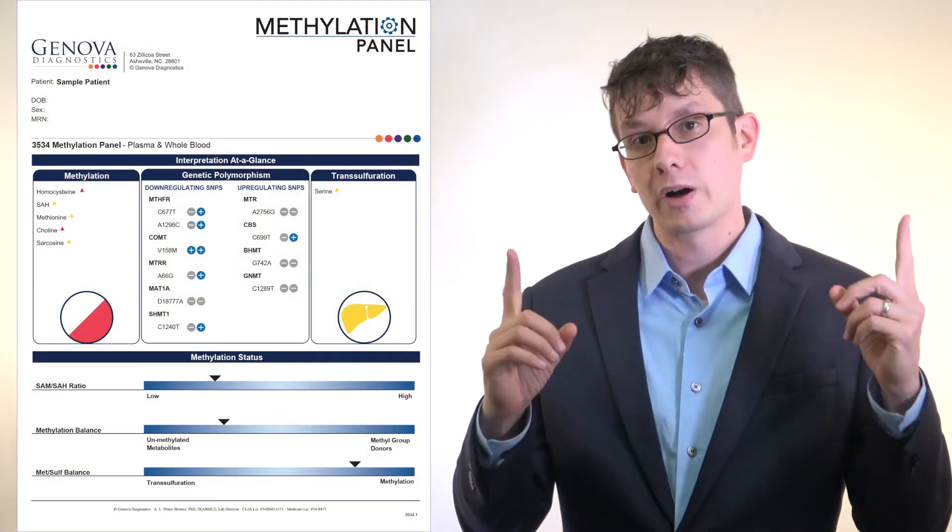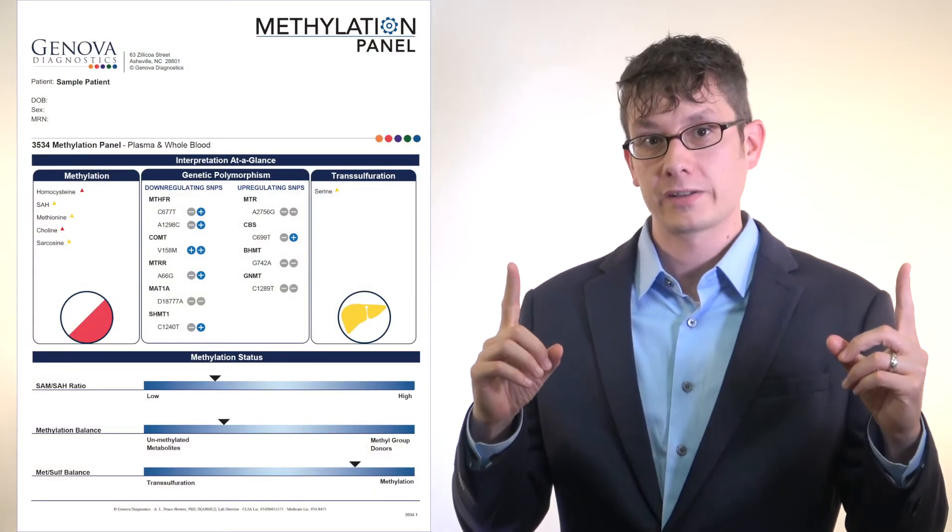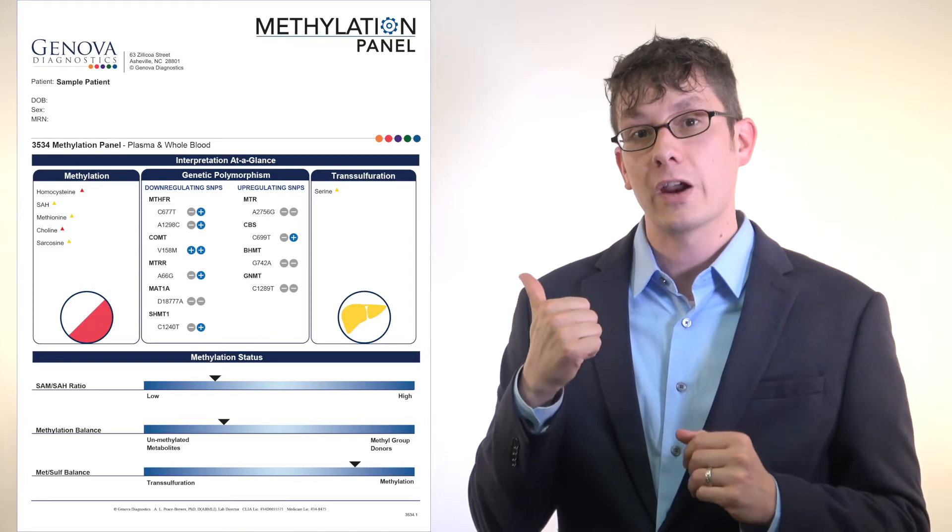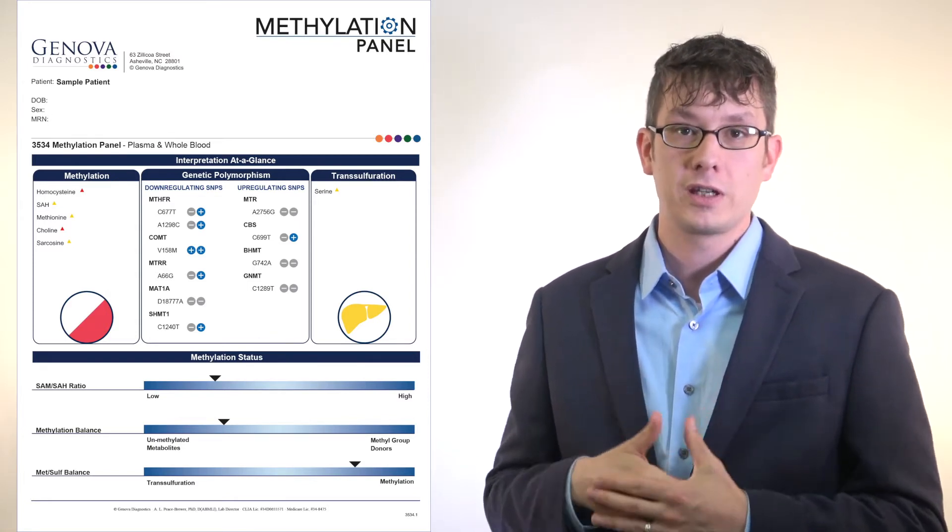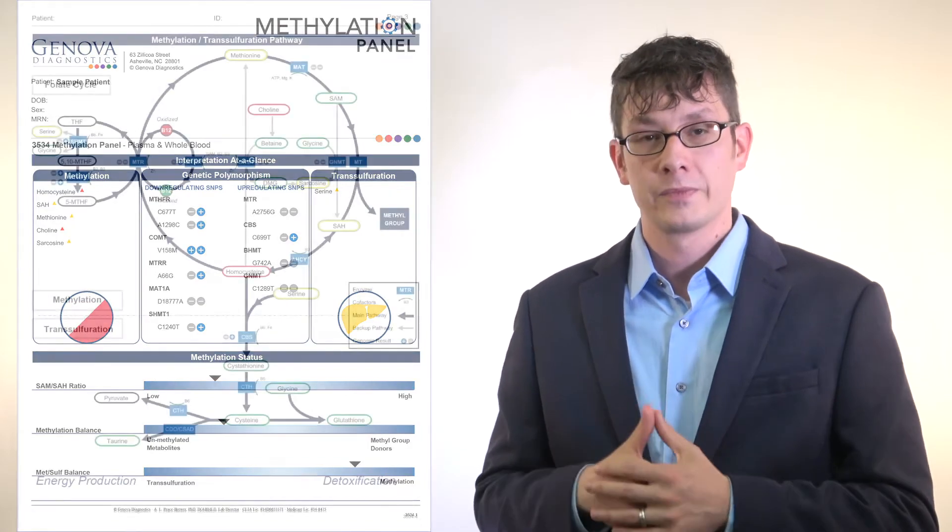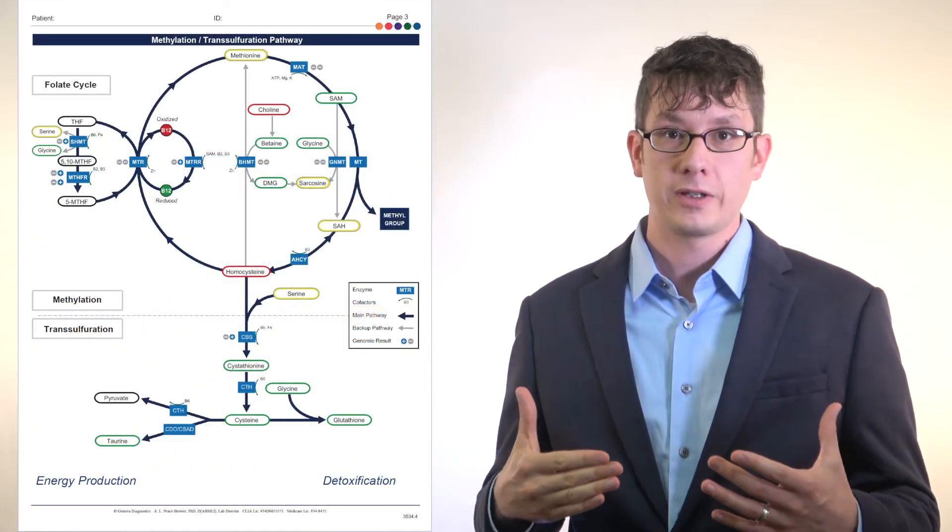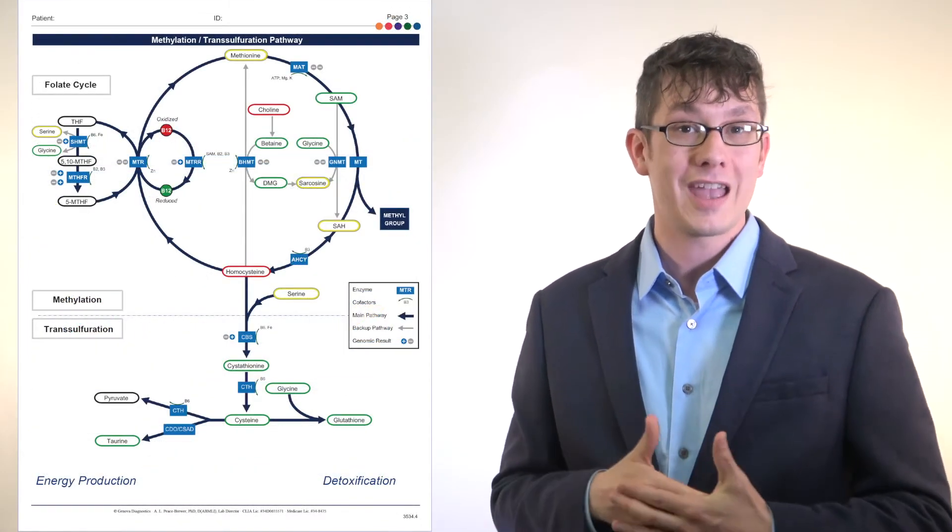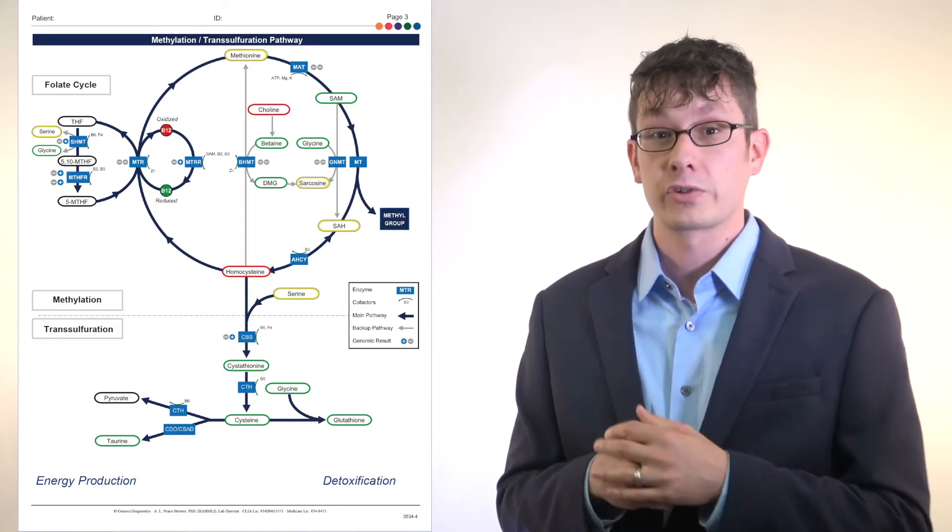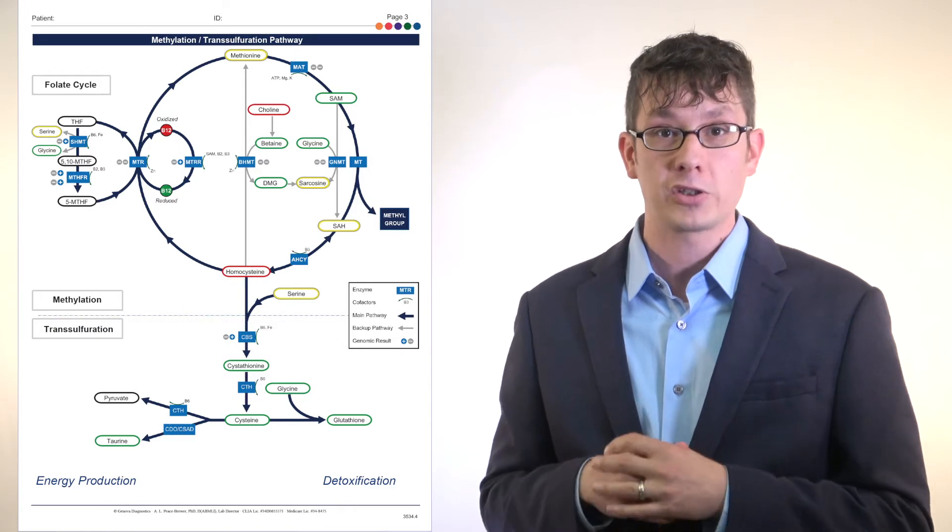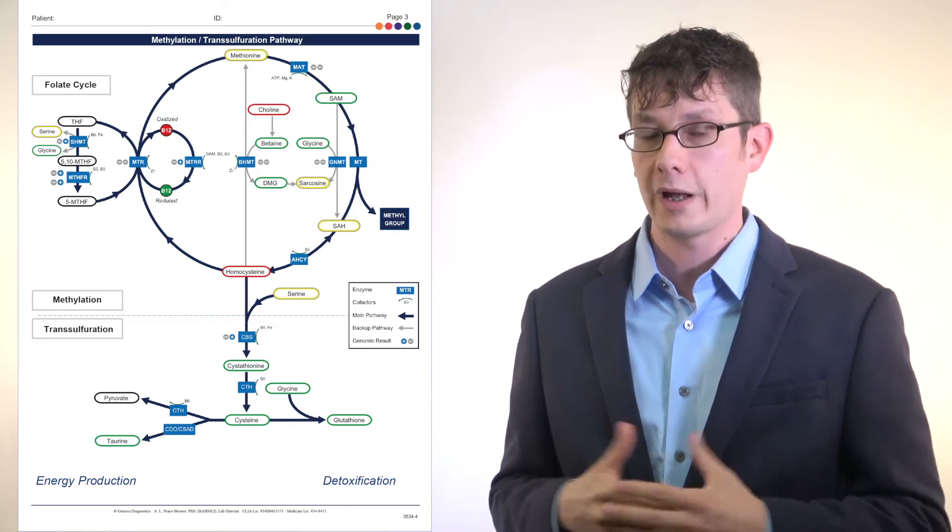Therefore, what you get with the Genova methylation panel is both a genetic test and a biomarker analysis for methylation status. We are assessing 10 genetic variants along with 14 different biomarkers related to the methylation and transsulfuration pathways. This is a first of its kind approach to methylation because it gives you both genomic and phenotypic results on the same test. It even places those results on the same biochemical pathway chart so you can visualize where the trouble spots are.